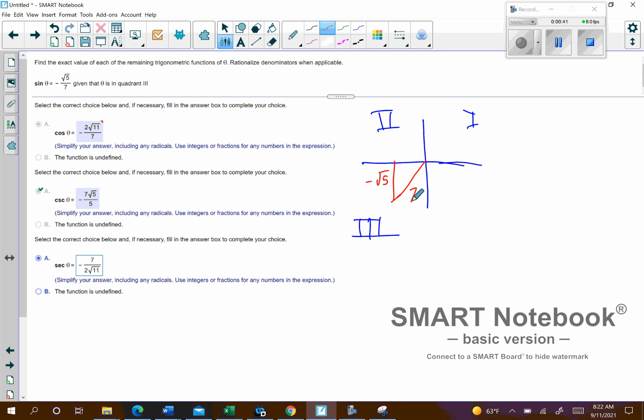It's going to be negative square root of 5, and then my r value here is going to be 7. Okay, the hypotenuse is always positive, so the 7 has to be positive, and that's where the negative is going to have to be is with the square root of 5. So next what we're going to do here is we're going to do the Pythagorean Theorem to figure out x.